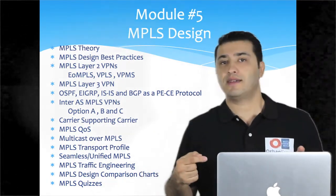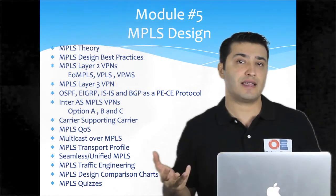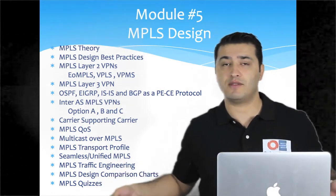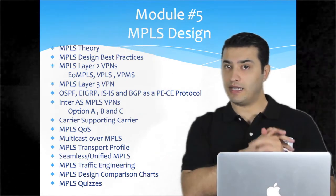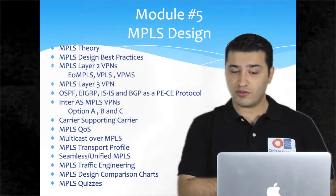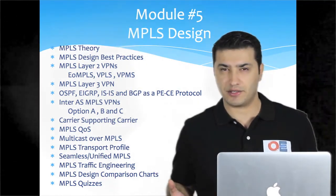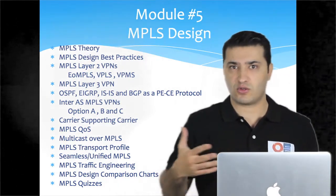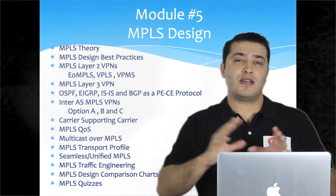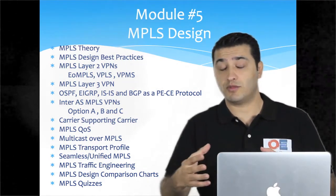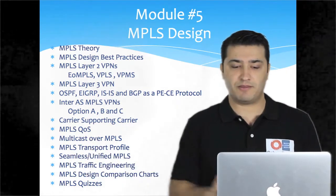We will cover MPLS VPN technologies from an intra-AS point of view first, then continue with inter-AS MPLS VPNs such as Option A, Option B, and Option C, comparing all of them from a design perspective with pros and cons. I will also explain carrier supporting carriers, MPLS transport profile, and seamless MPLS architecture — also known as unified MPLS — which brings MPLS to the access network.